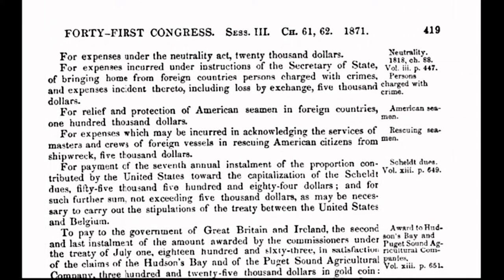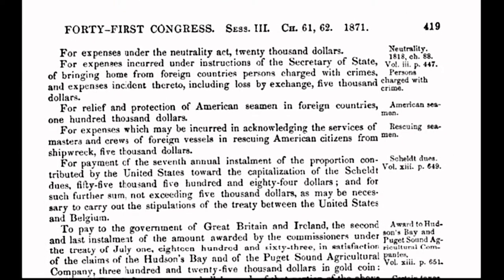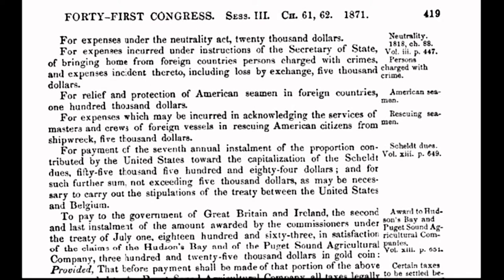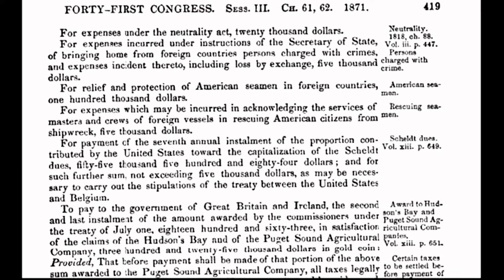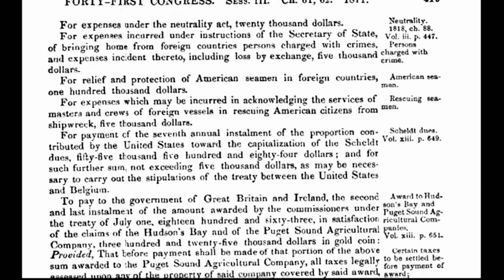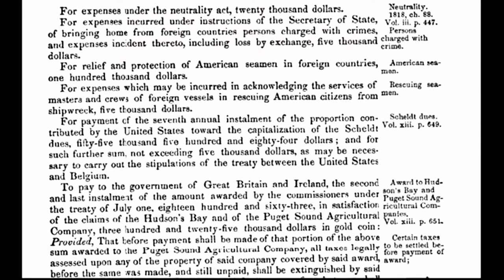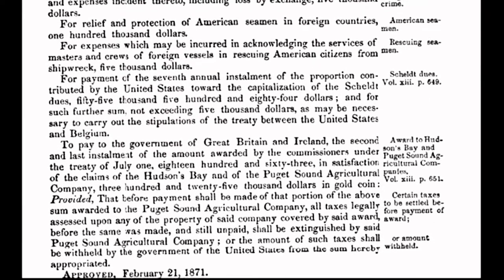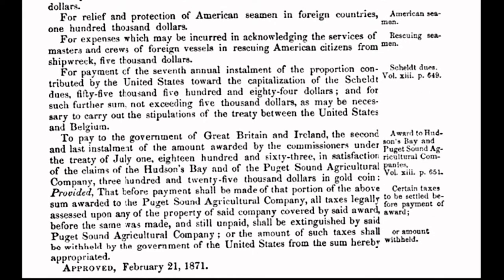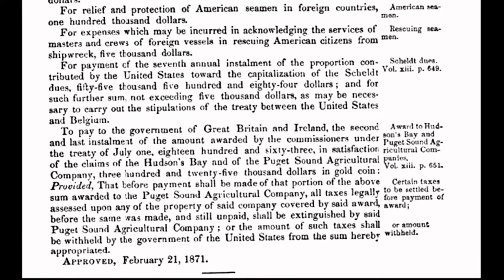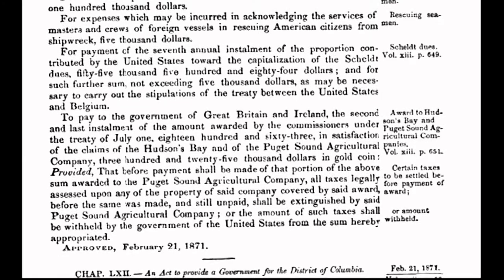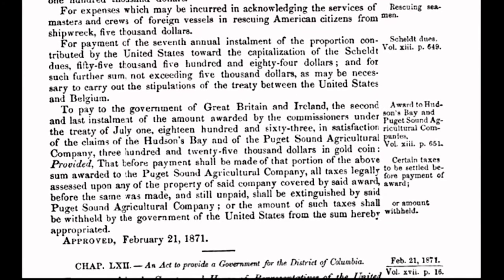In today's program, I will put the spotlight on an act that was enacted in the year of 1871 on February 21st. Congress passes an act to provide a government for the District of Columbia, also known as the Act of 1871. When you fully understand the ramifications of the past, you will then fully understand the ramifications of the present, and you will know how to change the future. And here is where our story begins.